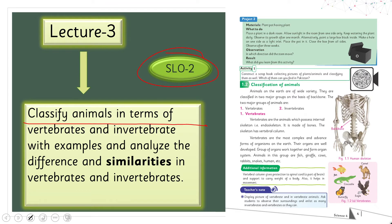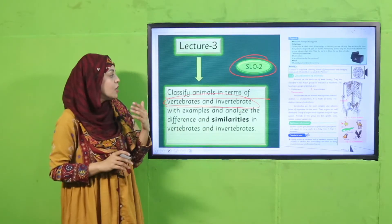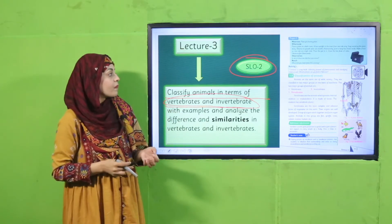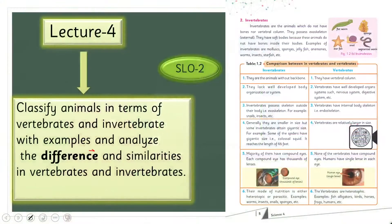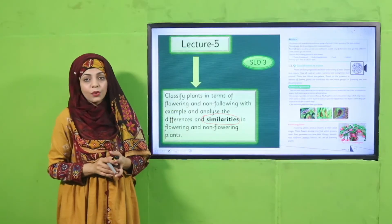In lecture number three, SLO number two will be discussed — classifying animals in terms of vertebrates and invertebrates. Students will classify animals into two major groups. In lecture number four, SLO two will continue, and students will differentiate between vertebrates and invertebrates.